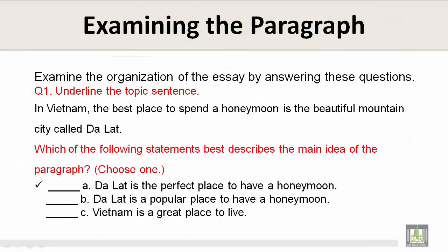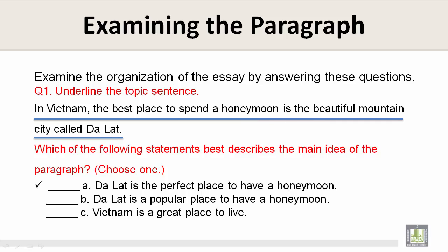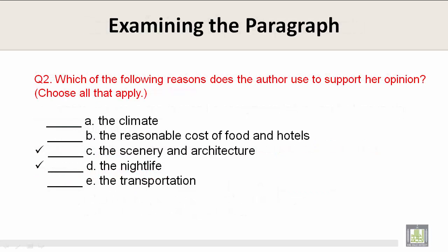Examine the organization of the essay by answering these questions. Question number one: underline the topic sentence. In Vietnam, the best place to spend a honeymoon is the beautiful mountain city called Da Lat. Which of the following statements best describes the main idea of the paragraph? That would be A: Da Lat is the perfect place to have a honeymoon. Question number two: which of the following reasons does the author use to support her opinion? Choose all that apply. The answers would be C and D — the scenery and architecture, and the nightlife.